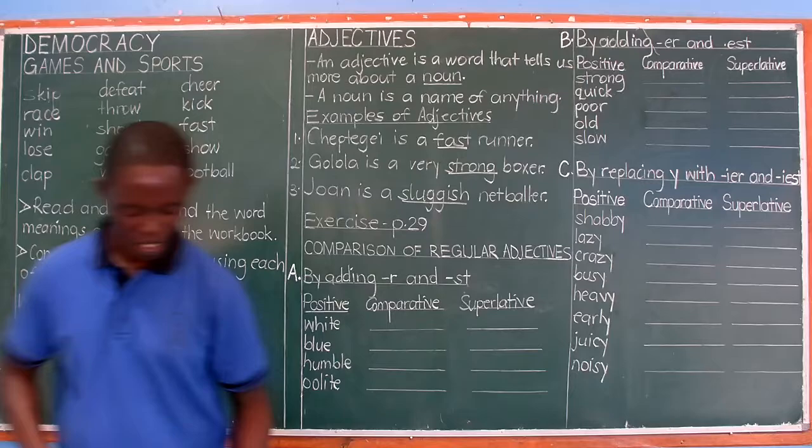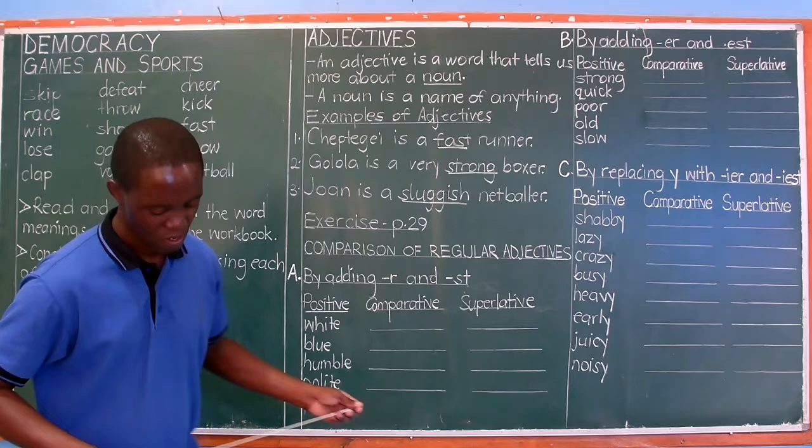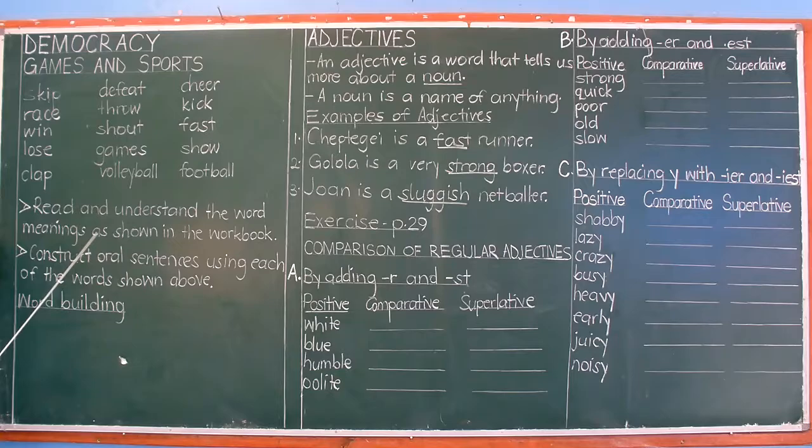Being P4, our vocabulary list is usually a bit shorter compared to P5, P6, and P7. The higher you go, the more words you add to the vocabulary list. For us today, the words are already here on the board. Not many, so let's go through and see what the teacher has in his package for this lesson. Games and sports — the vocabulary is as follows.